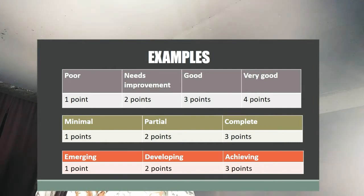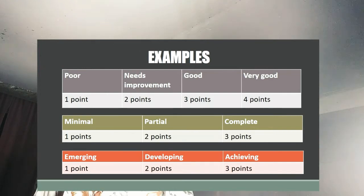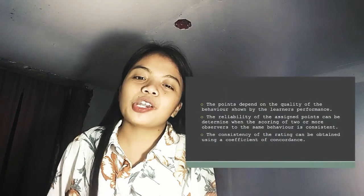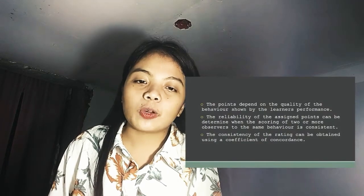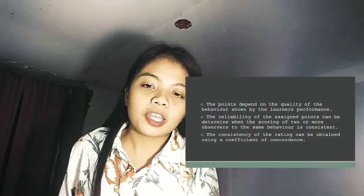We have two more examples of proficiency scales: minimal, partial, complete; and emerging, developing, and achieving. The points assigned depend on the quality of behavior shown by the learner's performance.